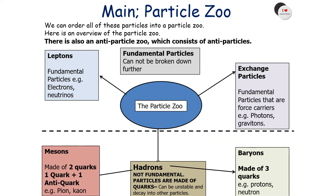In the fundamental particles, you can separate them into two main categories: leptons, which are fundamental particles such as the electron or a neutrino, and exchange particles, which are fundamental particles that are force carriers, including photons and gravitons. Hadrons can be separated into two families of their own: mesons, which are made from one quark and one antiquark — examples include the pion and the kaon — and baryons, which are made of three quarks, such as the proton or the neutron.